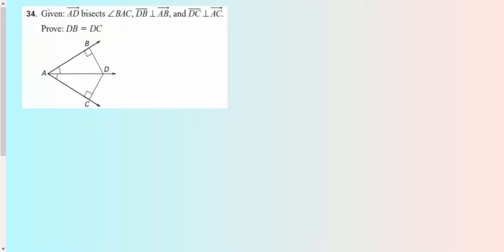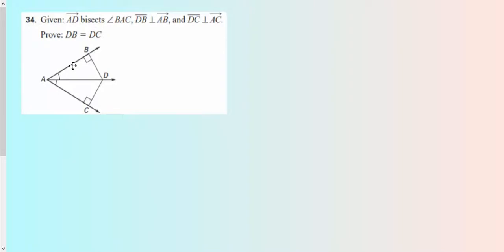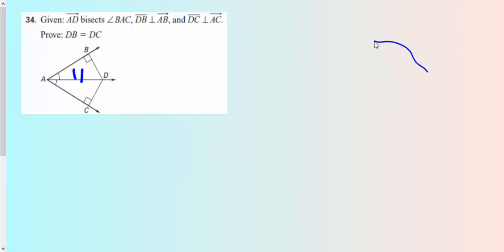And then here's the proofs. You have to prove that DB is equal to DC. Basically, you have right angles here. You have a reflexive side here. So these two triangles are congruent by angle, angle, side, and then CPCTC says that DB and DC are the same.